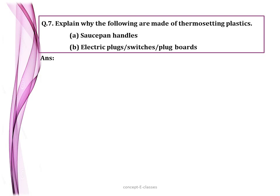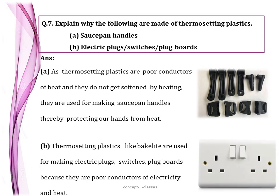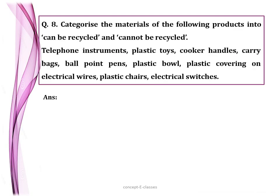Question number seven: explain why the following are made of thermosetting plastics — (a) saucepan handles and (b) electric plugs, switches, or plug boards. Thermosetting plastics are poor conductors of heat and do not soften by heating, so they are used for saucepan handles, thereby protecting our hands from heat. Thermosetting plastics like Bakelite are used for electric plugs, switches, and plug boards because they are poor conductors of both electricity and heat, making it safe for us to use switches.